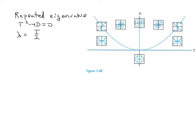Next we consider the case of repeated eigenvalues, which is when we live along the curve t squared minus 4d equals 0. In that case, our eigenvalue has only a single value because the radical term falls away, and we're left with just t over 2. On the left-hand side where t is negative, lambda will be less than 0. On the right-hand side where t is positive, lambda will be greater than 0.